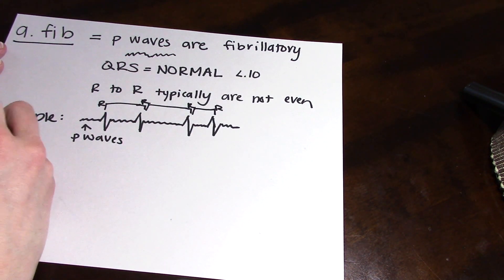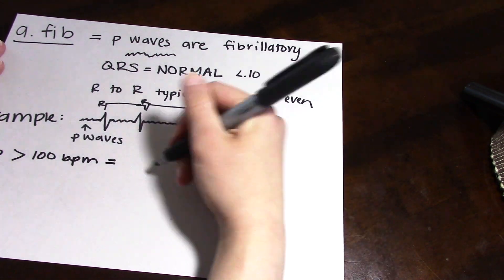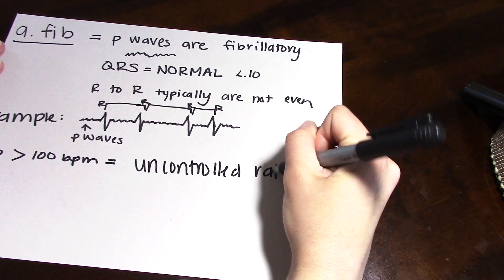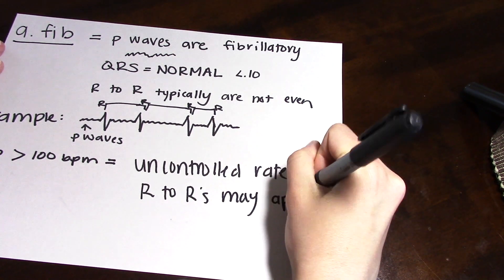I apologize that this next part is slightly cut off, but basically if your rate is above 100 beats per minute, then this is an uncontrolled afib rate. And if it is less than 100 beats per minute, then it is a controlled afib rate.